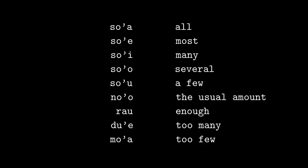You don't have to stick to particular numbers. 'Ro' can mean each, all, or every — so 'ro mlatu' means all cats, each cat, or every cat. There are also inexact quantifiers: the series so'a, so'e, so'i, so'o, so'u means almost all, most, many, several, and a few. There's also 'no'o' meaning the usual amount, 'rau' meaning enough, 'du'e' meaning too many, and 'mo'a' meaning too few.